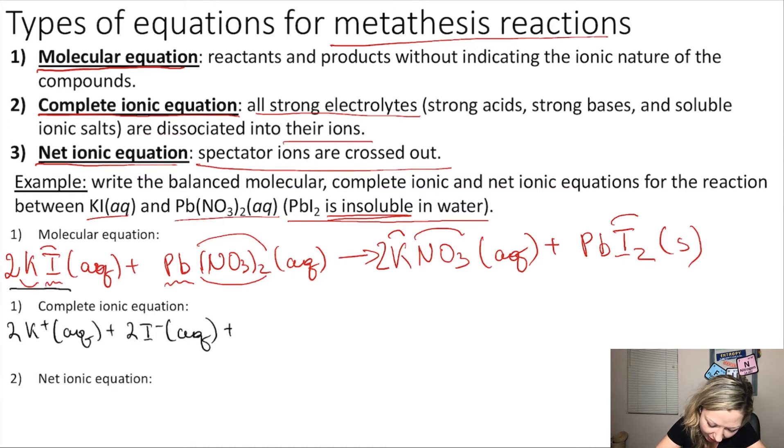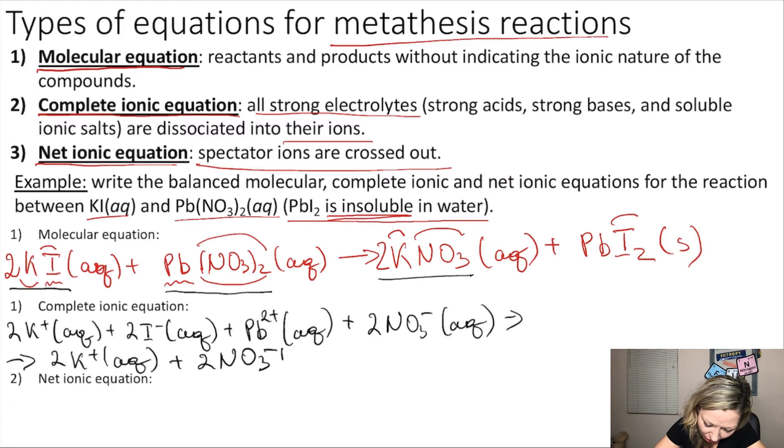Plus, now we move on to the next reactant, Pb2+, which is also aqueous, plus two NO3-, which is also aqueous. What are our products? So we have 2K+ the potassium ions, those are also aqueous, plus two times the nitrate ions, which are also aqueous.